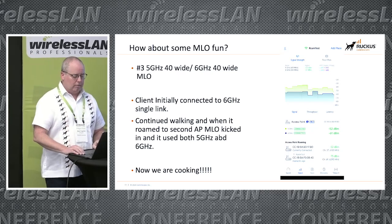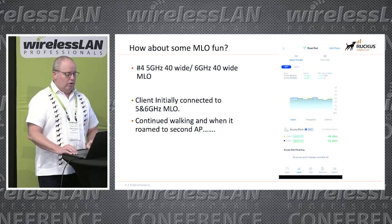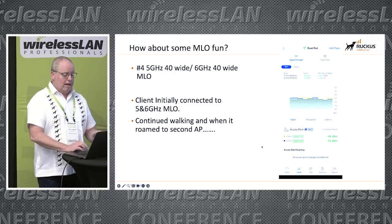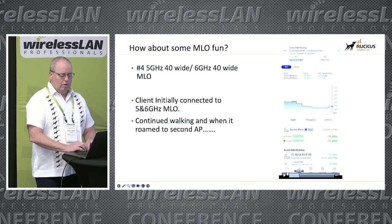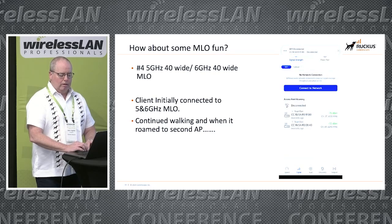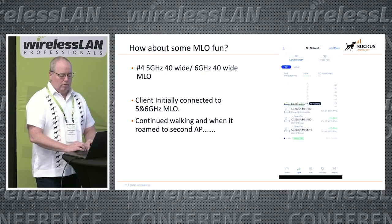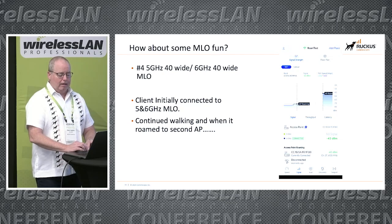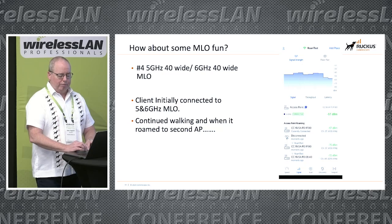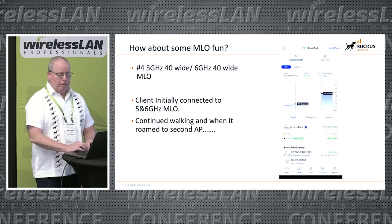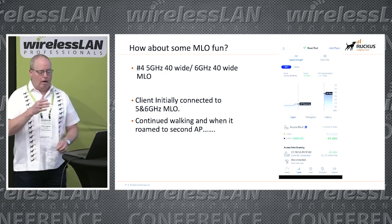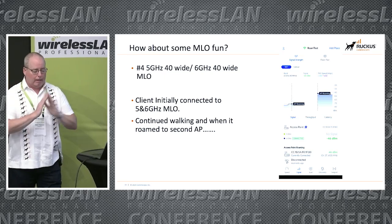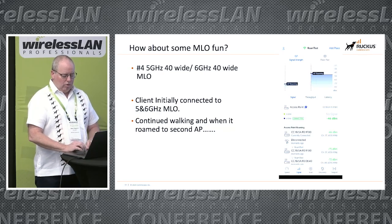I can't explain that yet — it's definitely something we need to investigate further. On one of the next tests, we got the client connected on an MLO connection, and as we moved across, the signal dropped — and just as I thought it was about to roam, it completely disconnected off the network. It dropped for a couple of seconds, then came back and connected, but then it went to a single connection after that. I was able to replicate this a couple of times: once on MLO, it would just drop off — almost like it got kicked off the network before roaming to the next AP on a single connection.